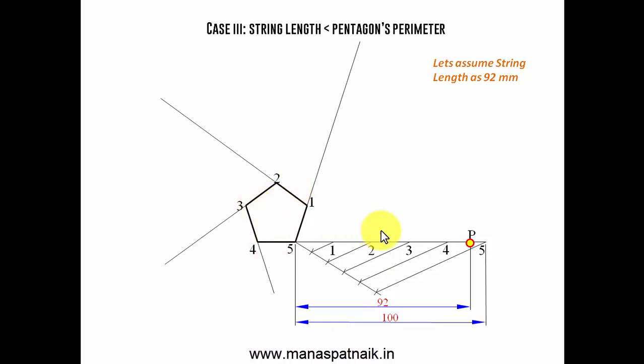Now the stuff is pretty much same. Let's have line from all these corners and with 1P as the radius 1 as the center cut an arc that's P1. Do the same stuff with 2P as the radius 2 as the center cut an arc that's P2. With 3P as the radius 3 as the center cut an arc that's P3. With 4P as the radius 4 as the center cut an arc that's P4 and it is finally going to end up somewhere here. This distance and this distance is going to be same that's P.